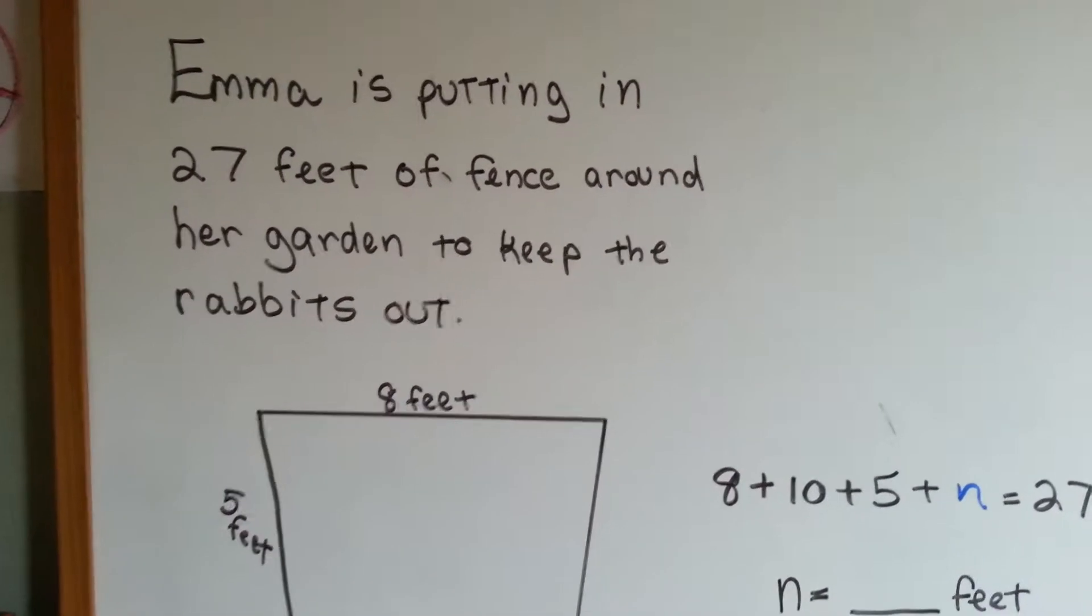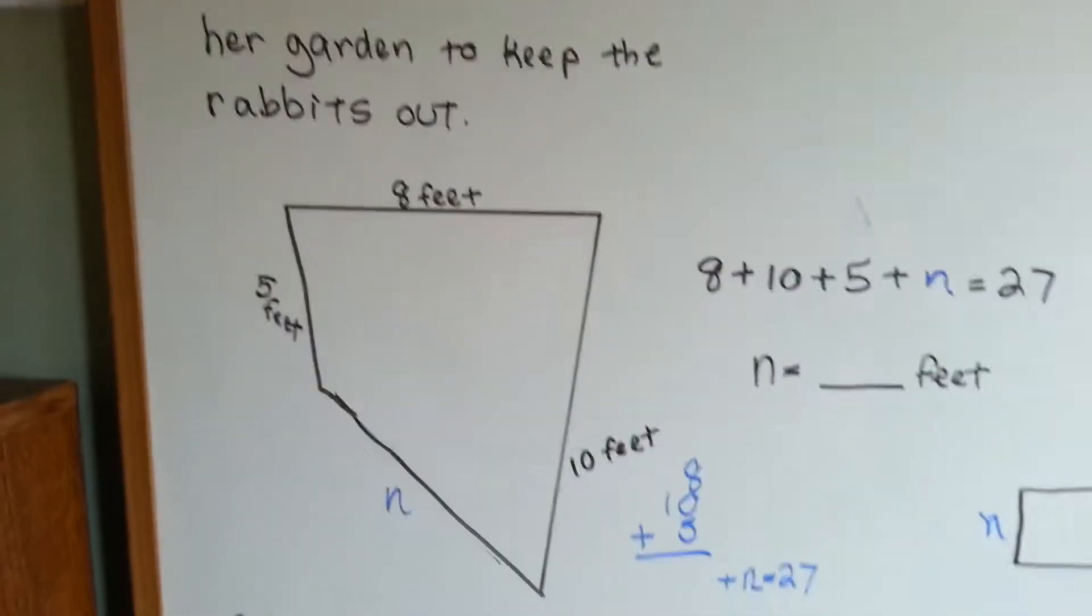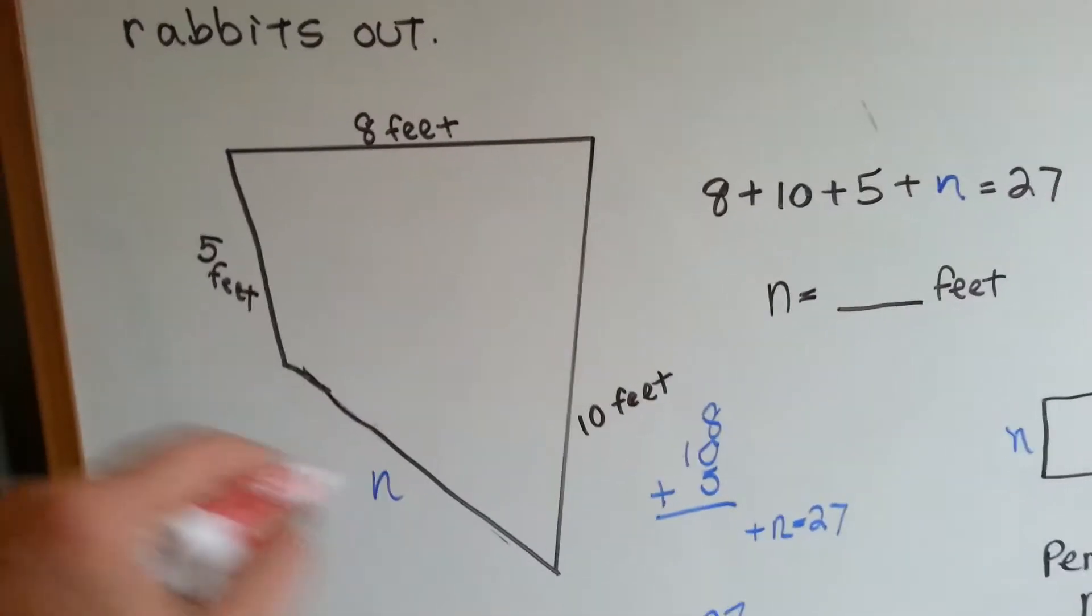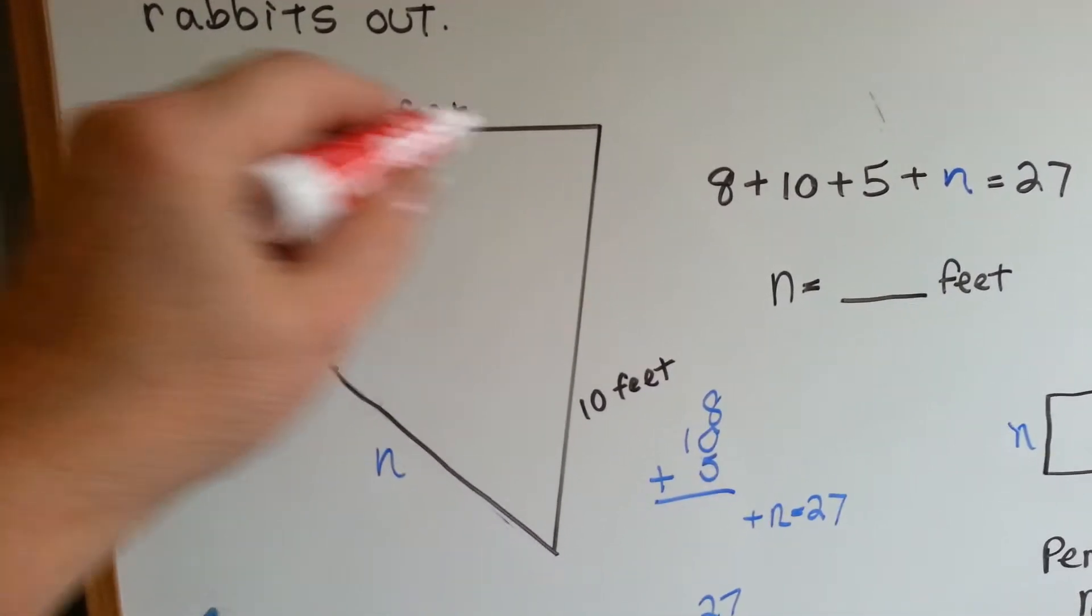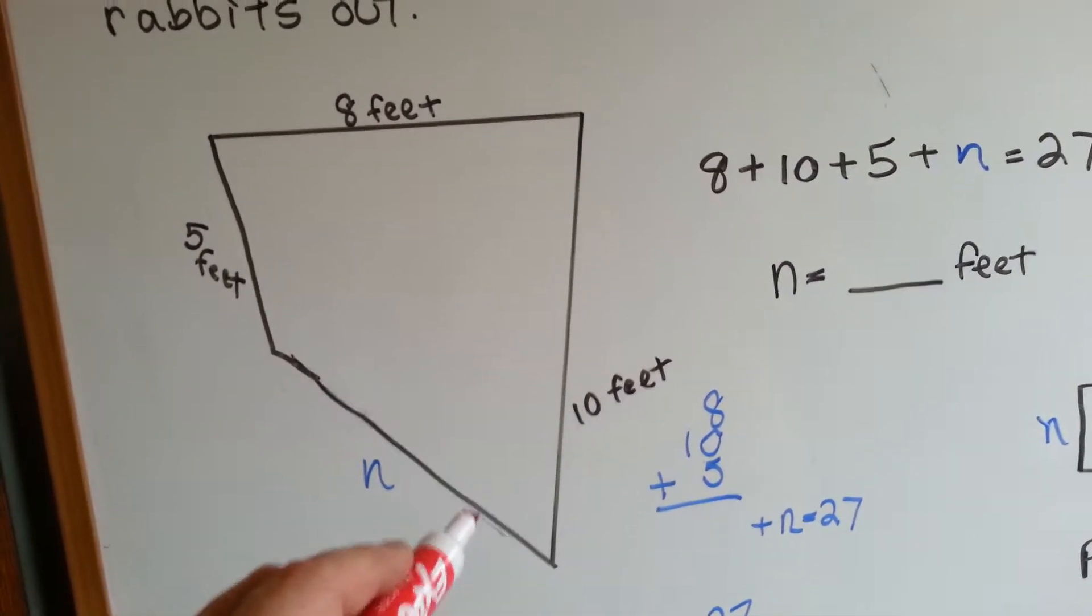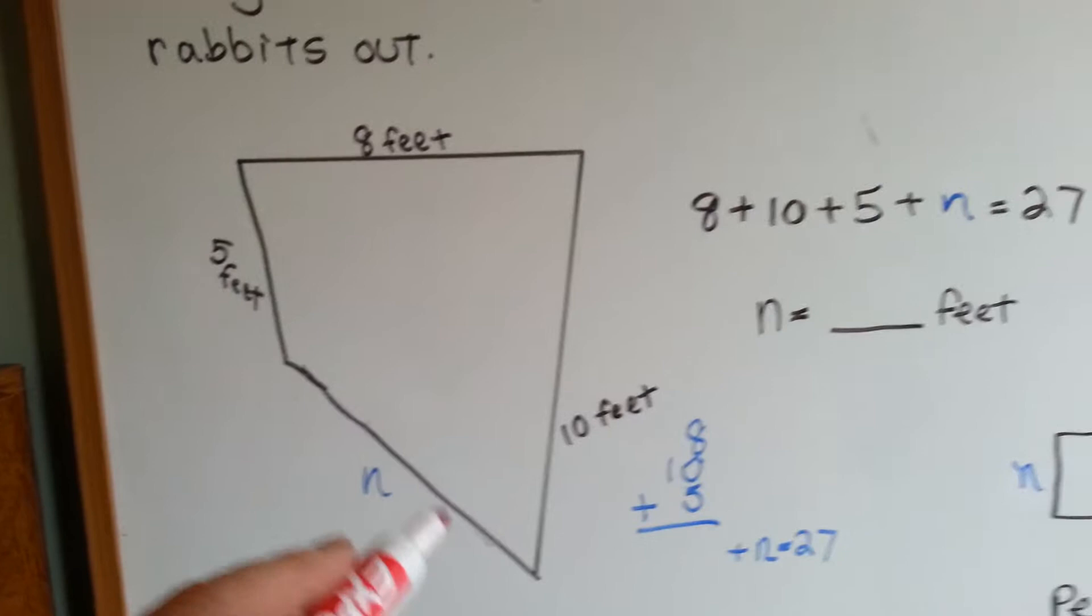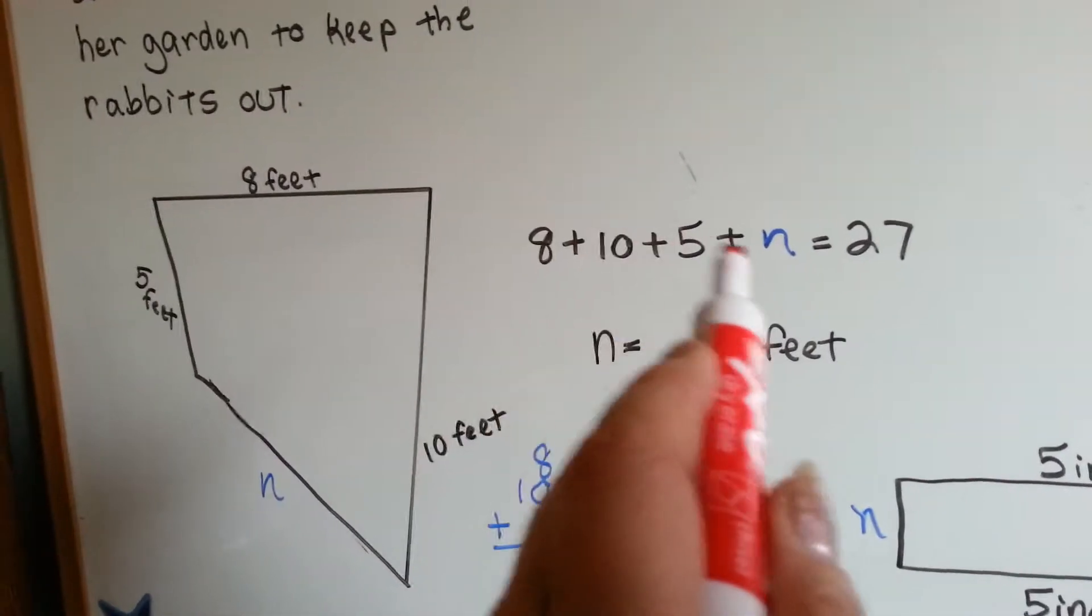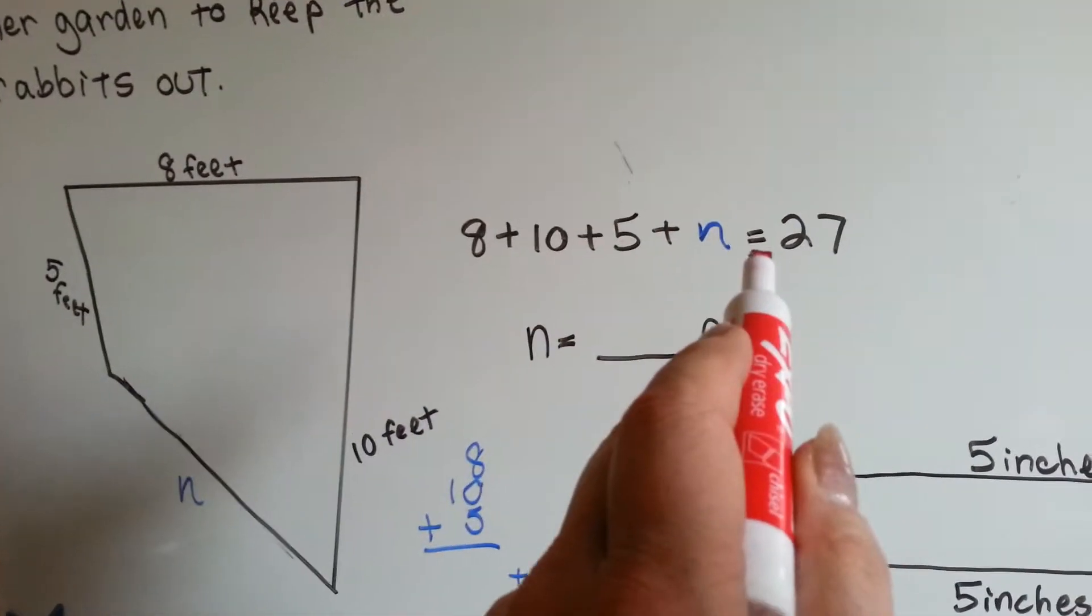Emma is putting in 27 feet of fence around her garden to keep rabbits out. So here's her garden. It's in the corner of the yard and this section is 5 feet, this section is 8 feet, and this section is 10 feet, and we don't know what this section measures. But we know that the whole thing is supposed to be 27 feet. So what we're going to do is we're going to add the 8, the 5, and the 10, plus this unknown number to equal 27.